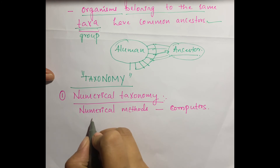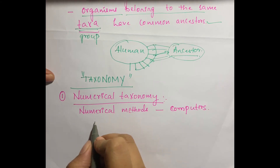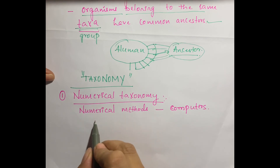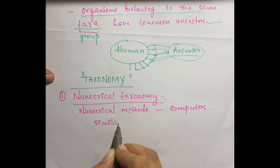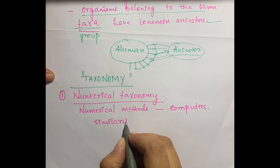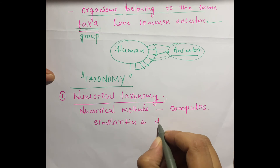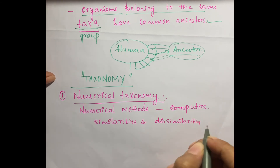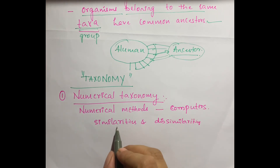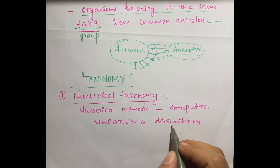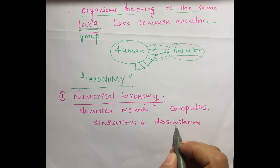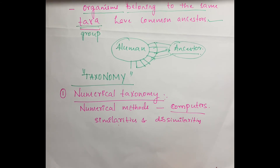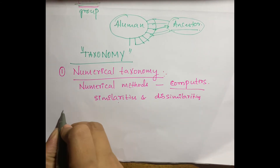Based on observations of characteristics of a group of organisms, we see the similarities and dissimilarities — the characters which are similar as well as those which are dissimilar. These are accounted for using computers. That is called numerical taxonomy.